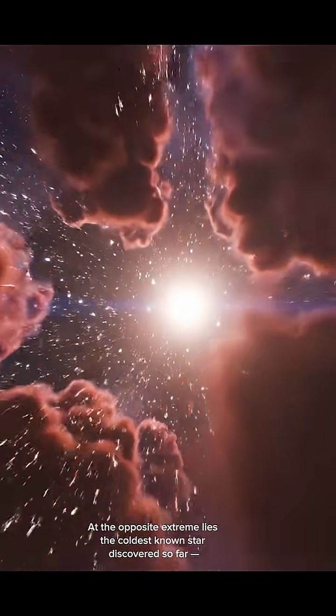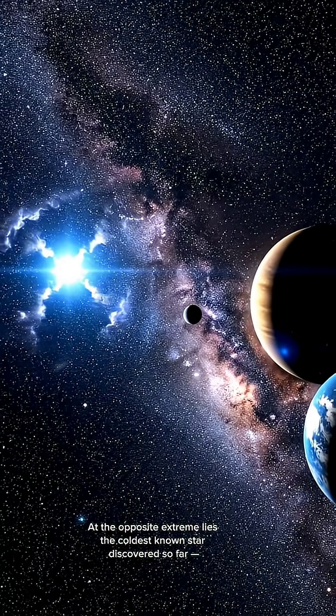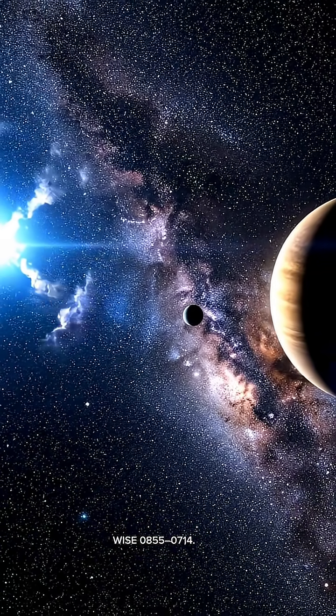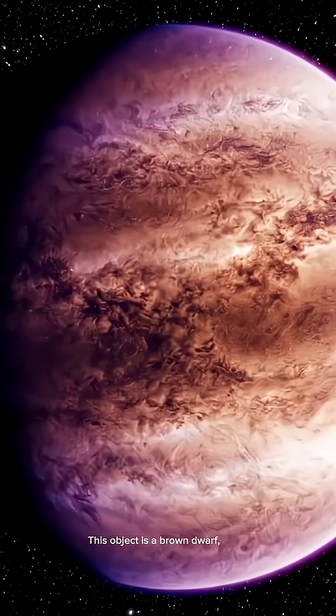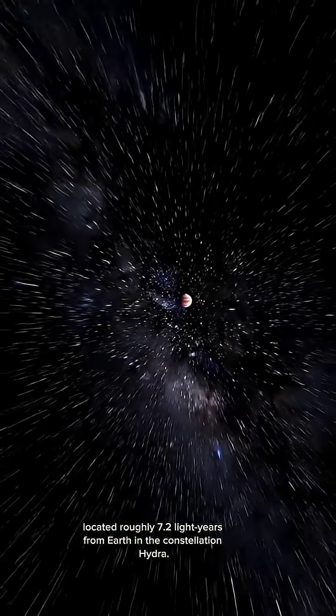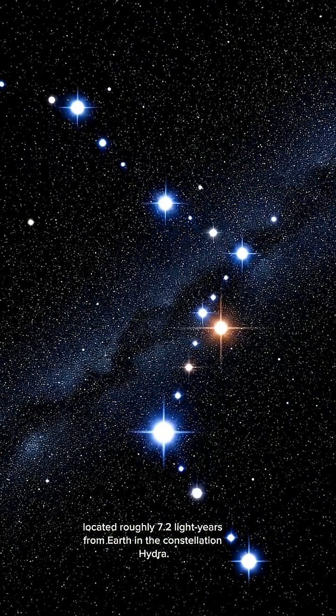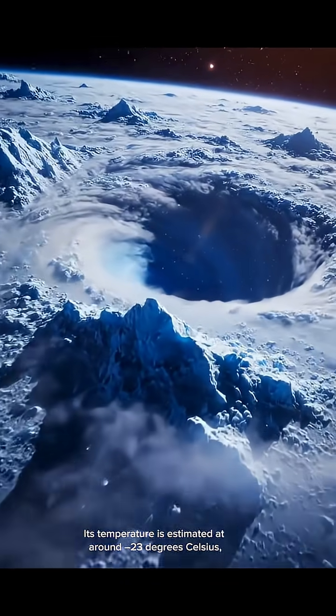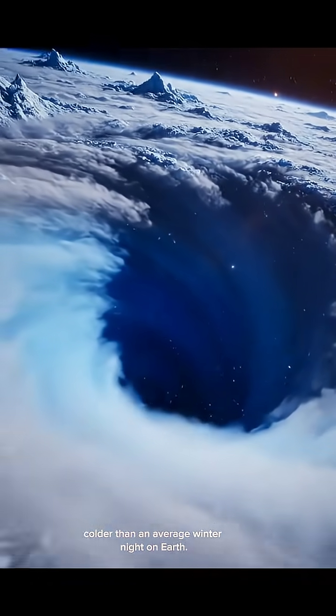At the opposite extreme lies the coldest known star discovered so far, WISE 0855-074. This object is a brown dwarf located roughly 7.2 light years from Earth in the constellation Hydra. Its temperature is estimated at around -23 degrees Celsius, colder than an average winter night on Earth.